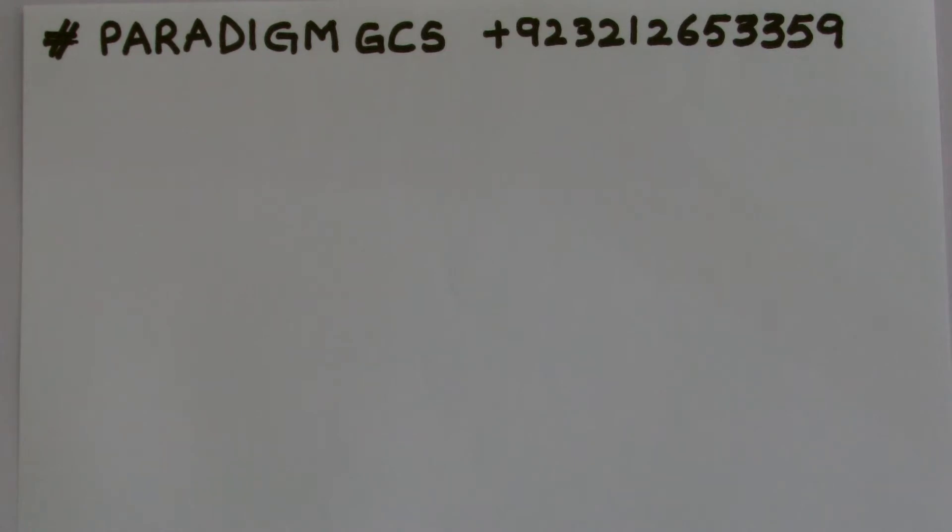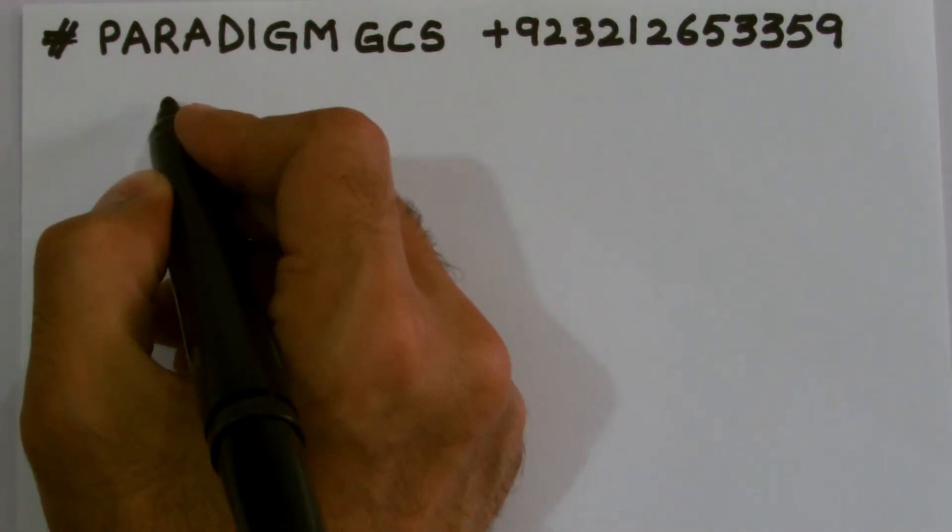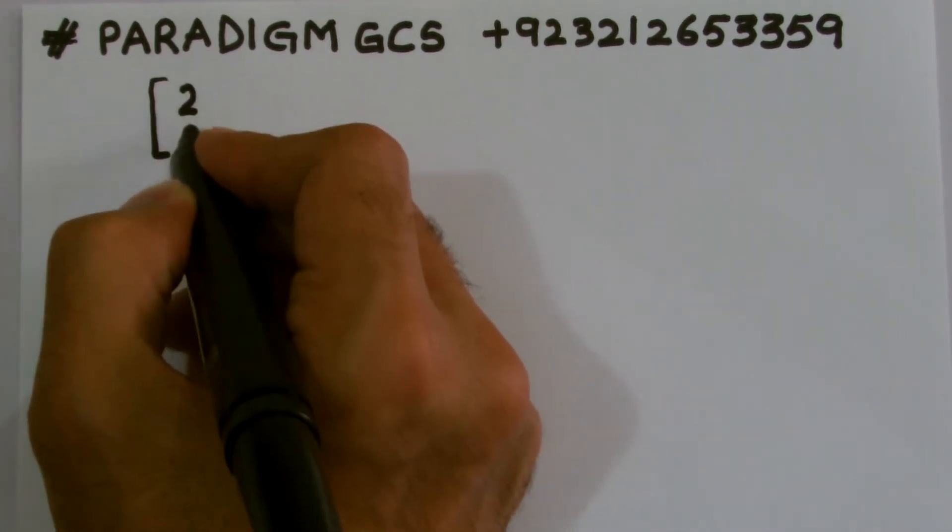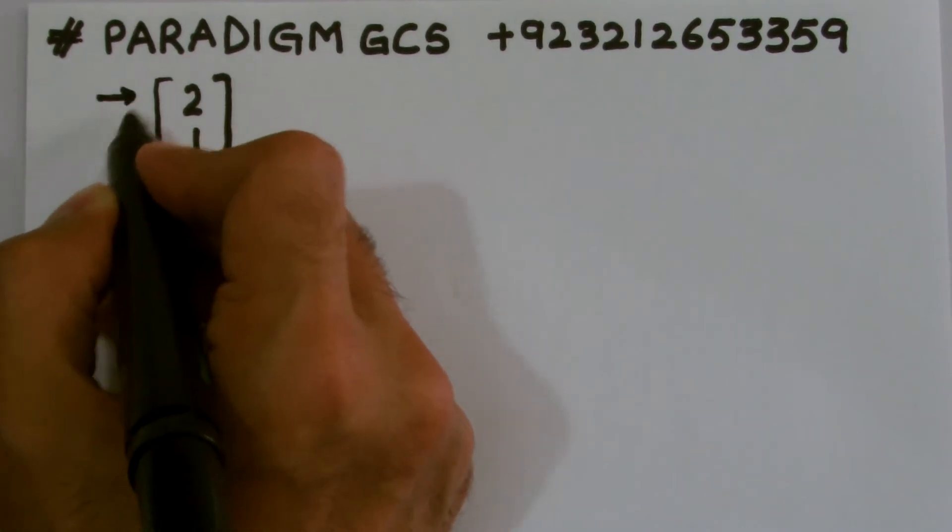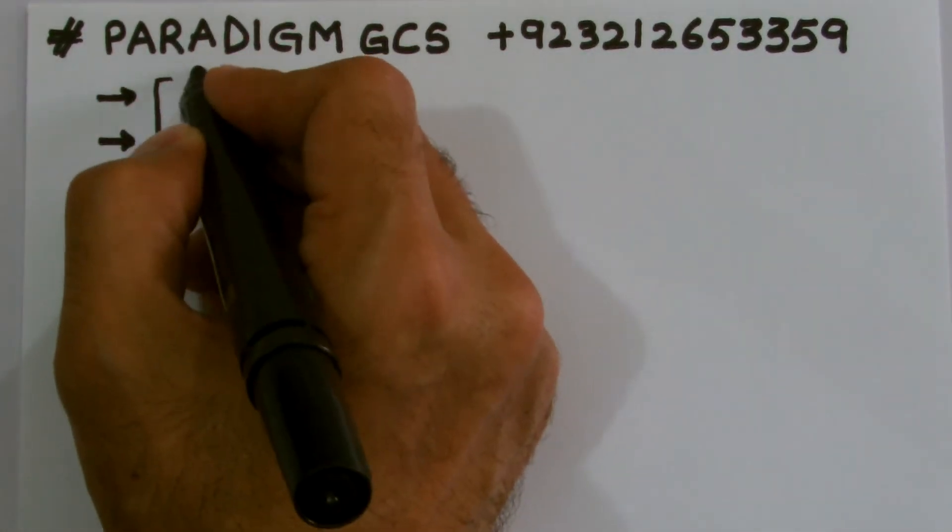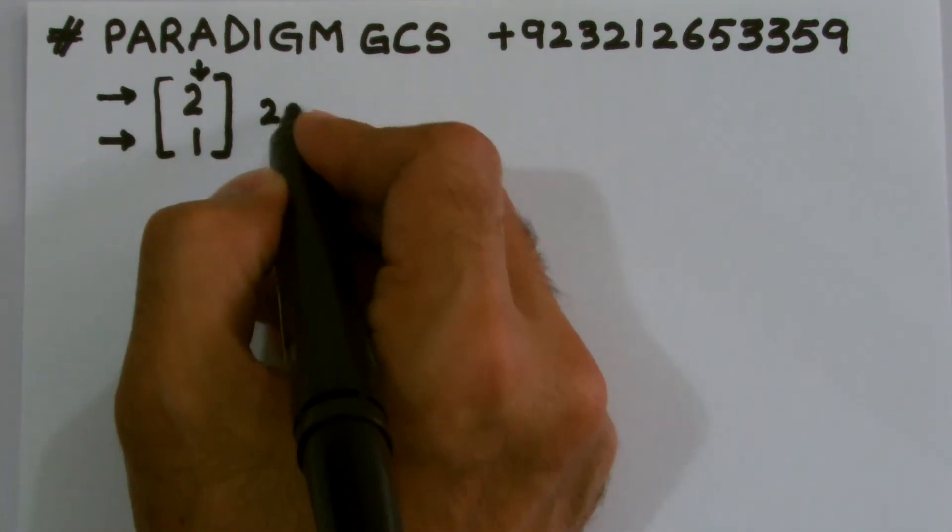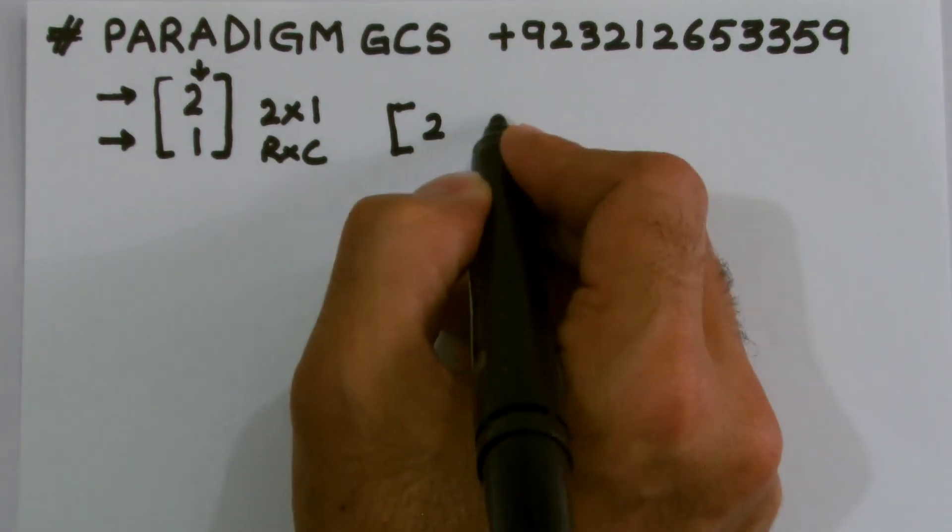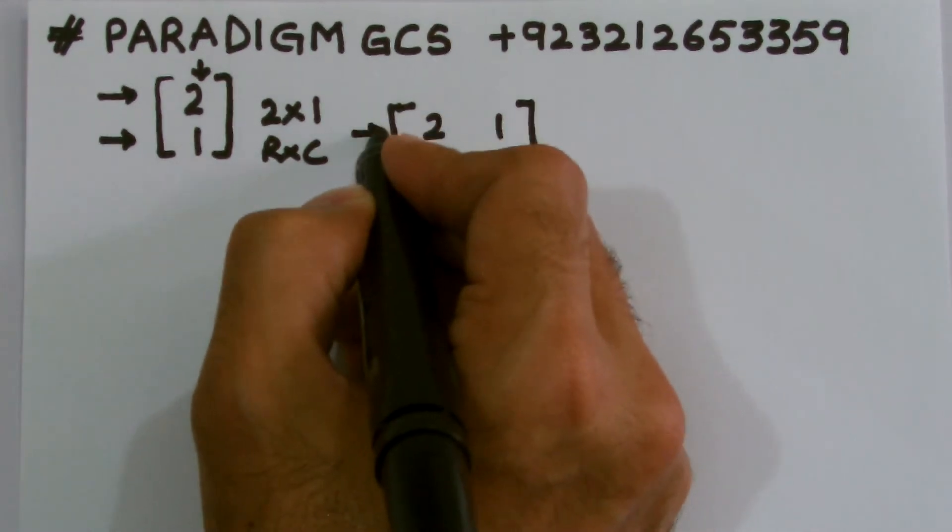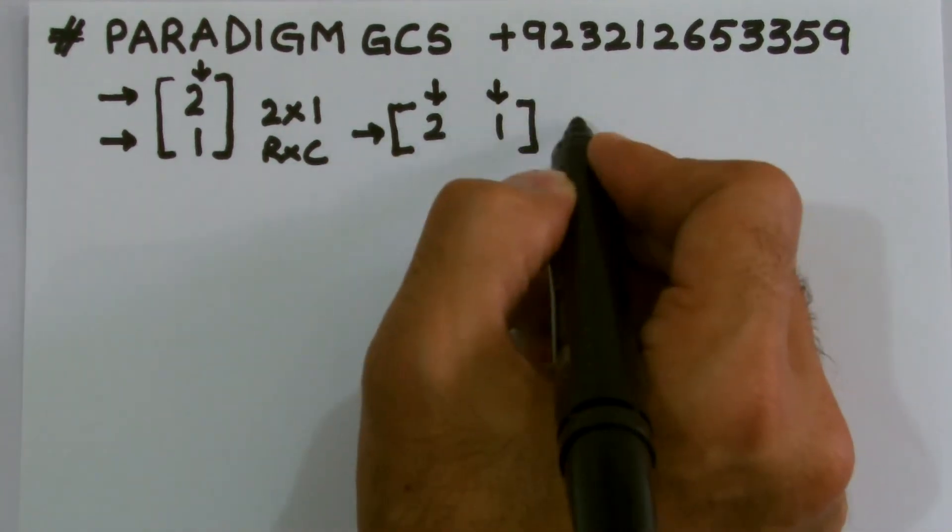But before we proceed, we should have some clear idea about the order of matrix because it can only be done if the matrices have the same order. This can simply be checked by looking at the number of rows and columns in all the matrices. For example, if I'm given a column matrix with 2, 1, I have two rows. The horizontal ones are the rows, the vertical ones are the columns. So I have two rows and one column. The order becomes 2 by 1 as we consider the order of matrix as row by column. Similarly, if I consider a row matrix like 2, 1, then I have one row and two columns and the order becomes 1 by 2.